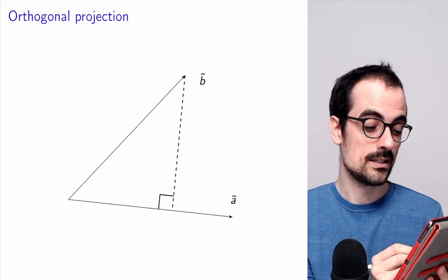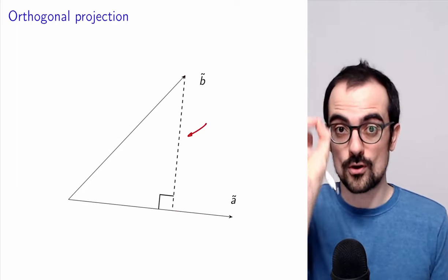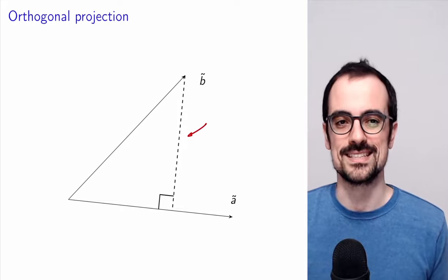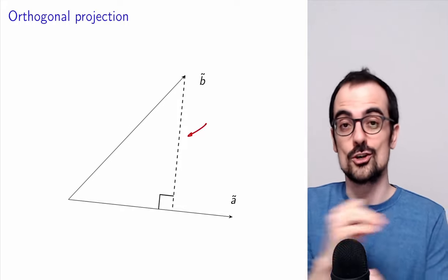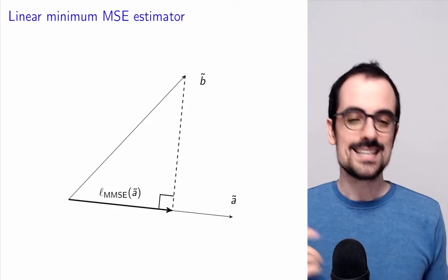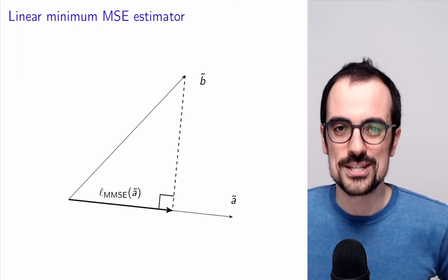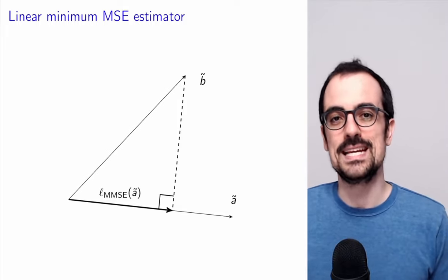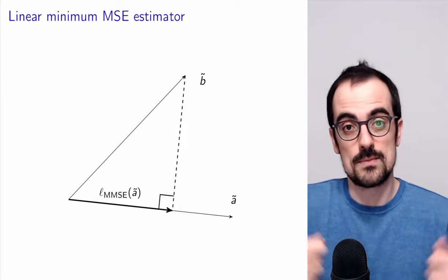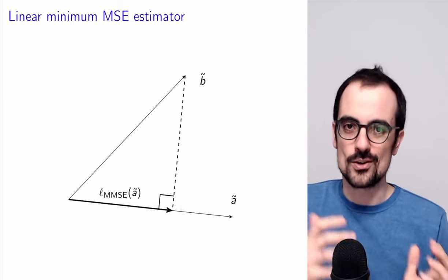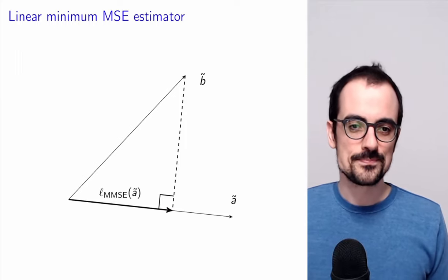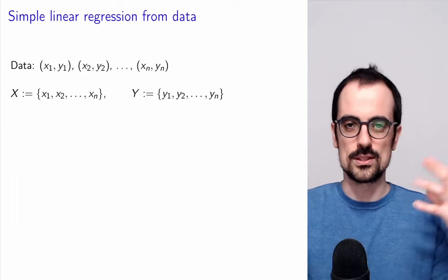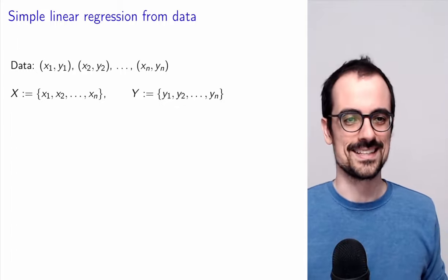The estimate has to lie on the line through A. The point closest to B on that line is found by going orthogonally — perpendicularly — to A. This is exactly the orthogonal projection of B onto that line. This gives exactly the expression for the linear minimum mean squared error estimator of B given A, derived from a completely geometric point of view using the fact that covariance behaves like an inner product.